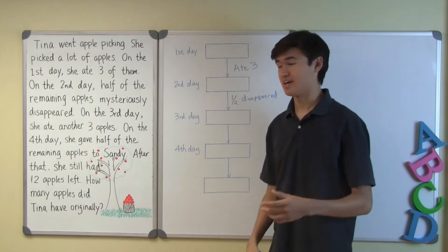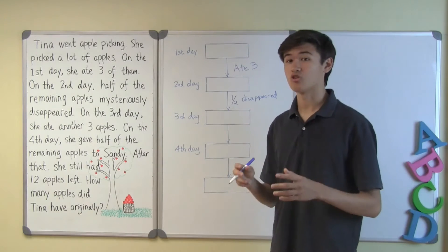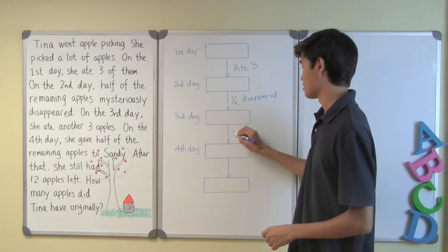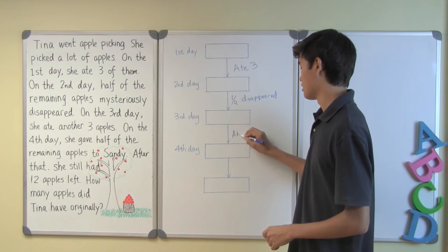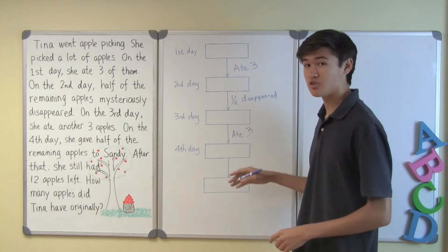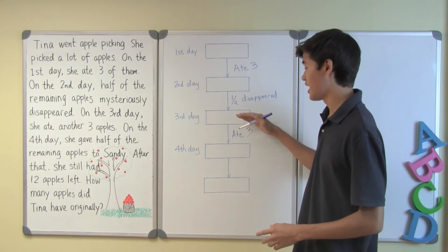Now let's go on to day three. On day three, Tina ate another three apples. Putting the information right here will show that there's a change between day three and day four.